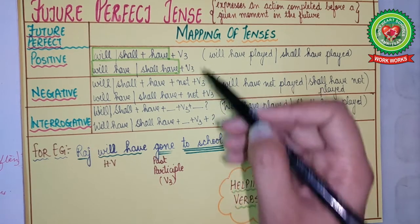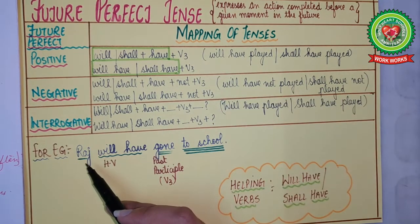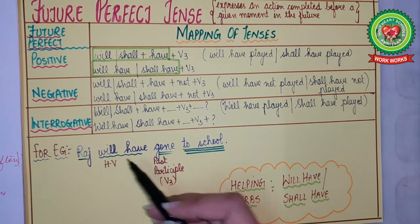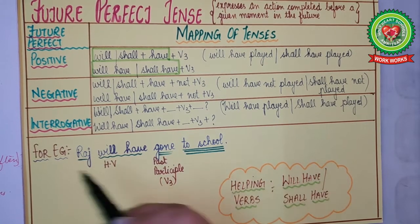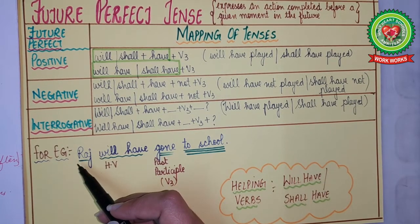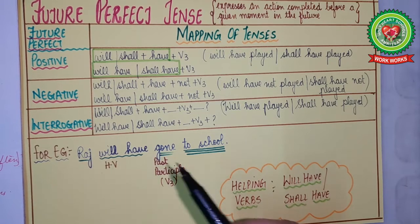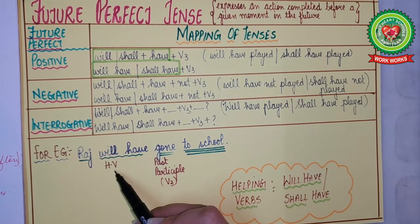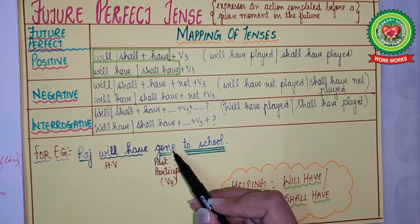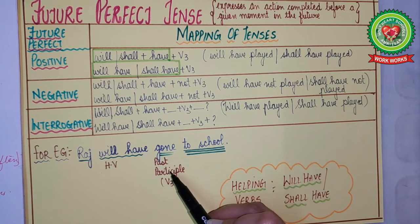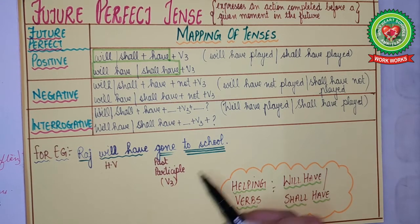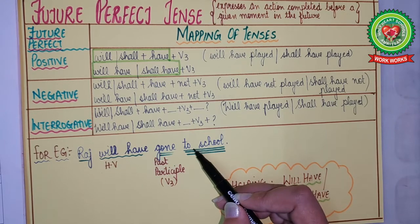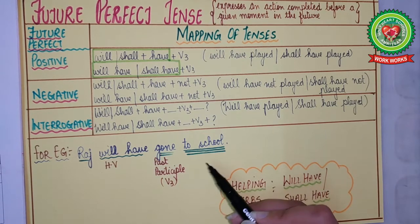Let us see an example: 'Raj will have gone to school.' Raj is the subject. 'Will have' is the helping verb. 'Gone' is the past participle form of the verb (V3). 'To school' is the object.